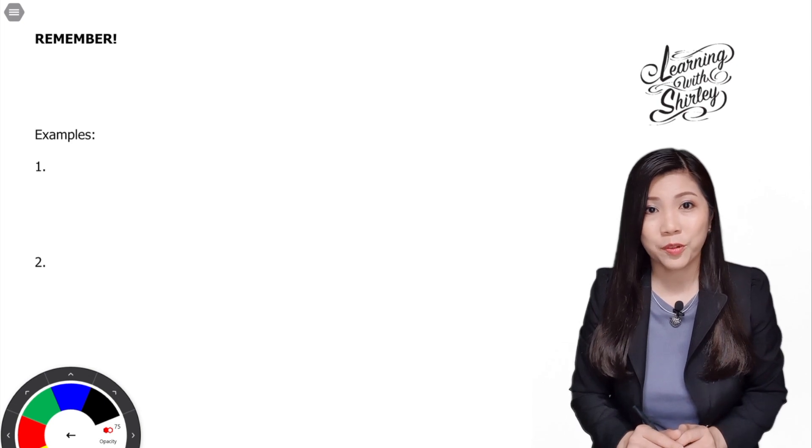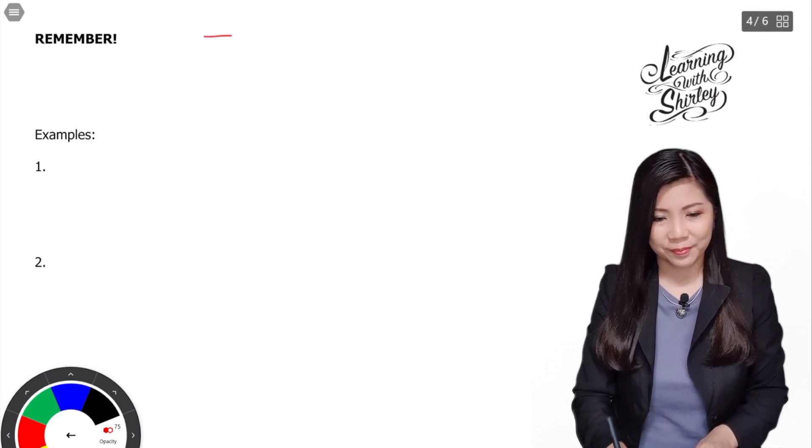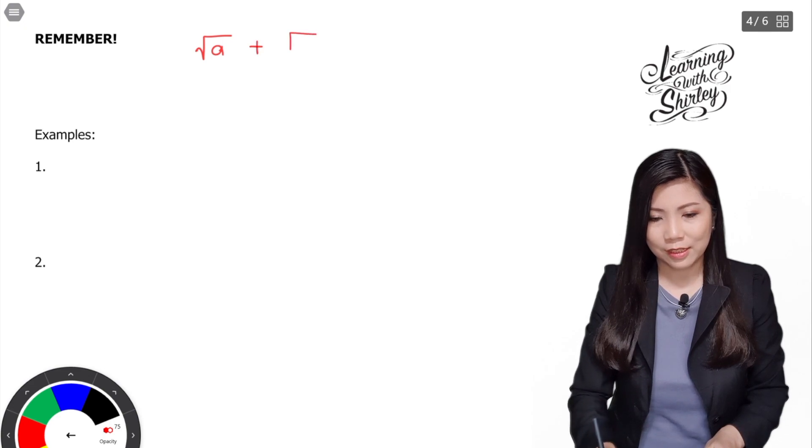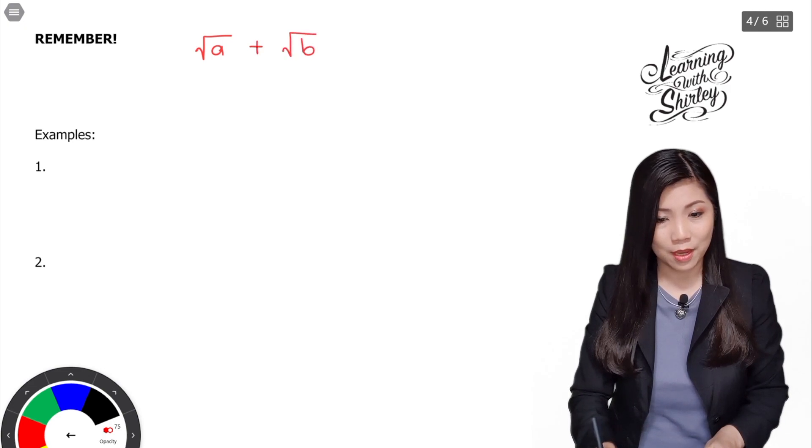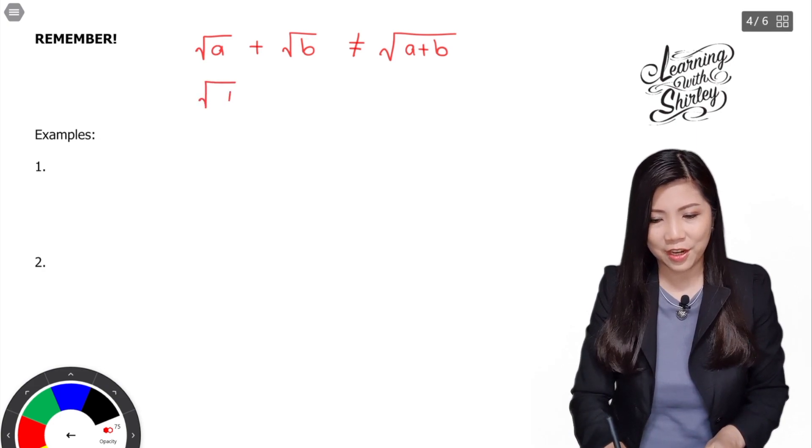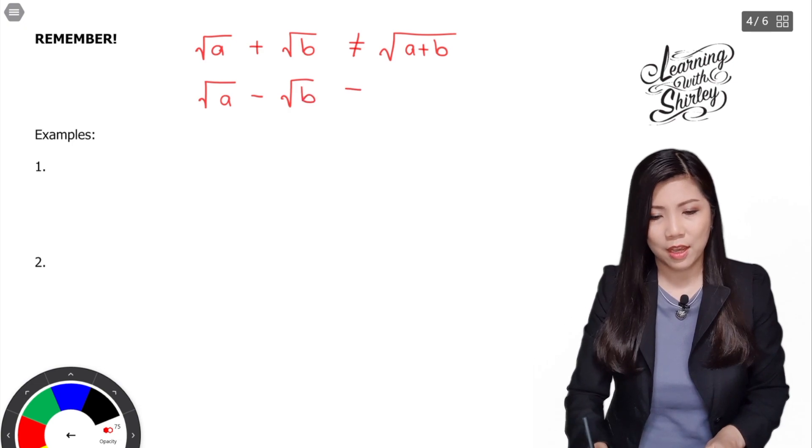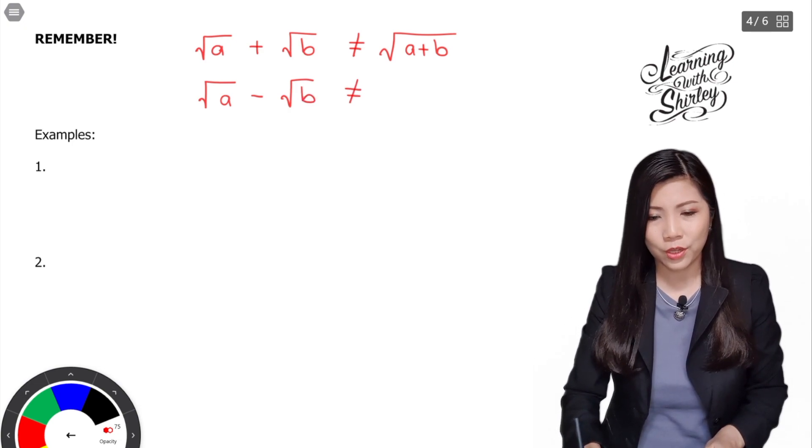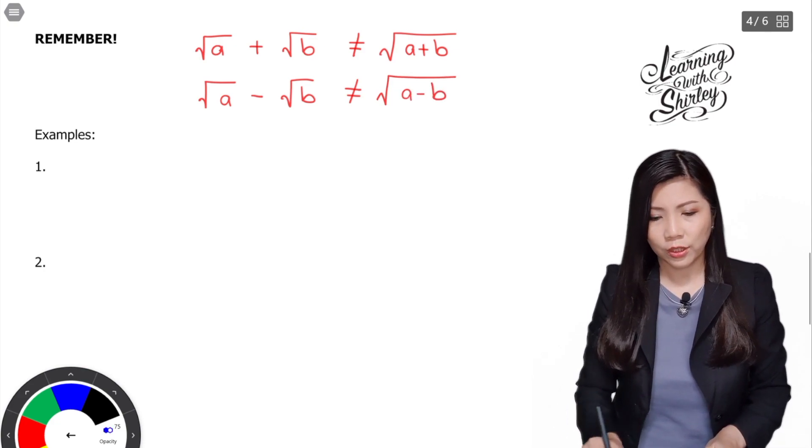There are some things you need to remember. Remember, surd A plus surd B is not equal to surd A plus B. Remember that. Next, surd A minus surd B is not equal to surd A minus B. Let's look at examples.